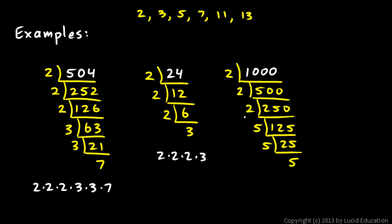And, of course, we could write this as 2 cubed times 5 cubed. That's the prime factorization of 1,000.